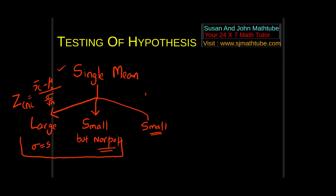For the third case — small sample, unknown distribution — we use t-distribution: t calculated = (x̄ − μ₀) / (s / √n). Take a screenshot or note these things — this is very important.